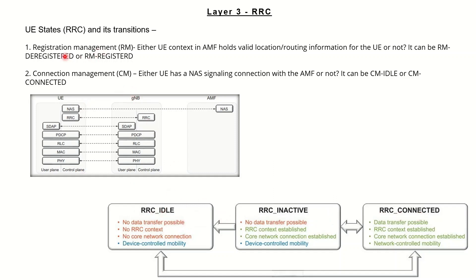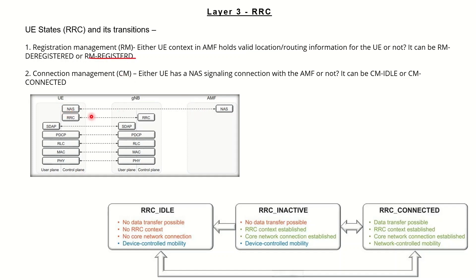Before getting into these three modes of RRC, let's understand registration management and connection management first. Registration management is basically related to the registration of the UE at the core network, so that the core network can have all the valid location and routing related information of the user. If it gets that, it will be considered as RM registered mode.